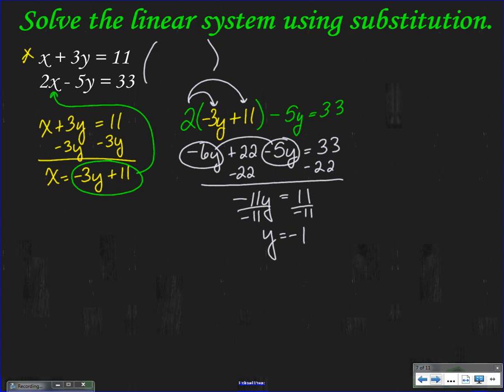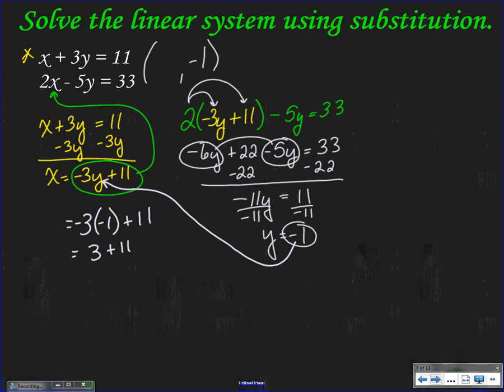Now I'm going to come back and plug in Y equals negative 1 into X equals negative 3Y plus 11. So I get negative 3 times negative 1 plus 11, which is 3 plus 11 equals 14. So my answer is 14, negative 1. Very, very good.